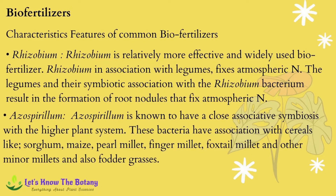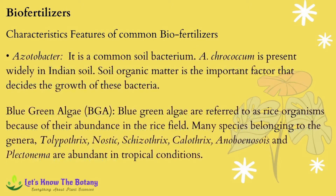The Rhizobium population in soil is dependent on the presence of legume crops; in the absence of legumes, the population of Rhizobium in the soil diminishes. Another bio fertilizer, Azospirillum, is known to have a close associative symbiosis with higher plant systems. These bacteria are associated with cereals like sorghum, maize, pearl millet, finger millet, foxtail millet and other minor millets, as well as fodder grasses.